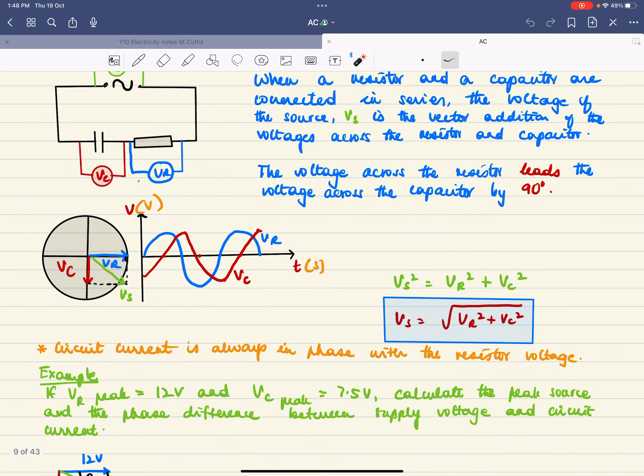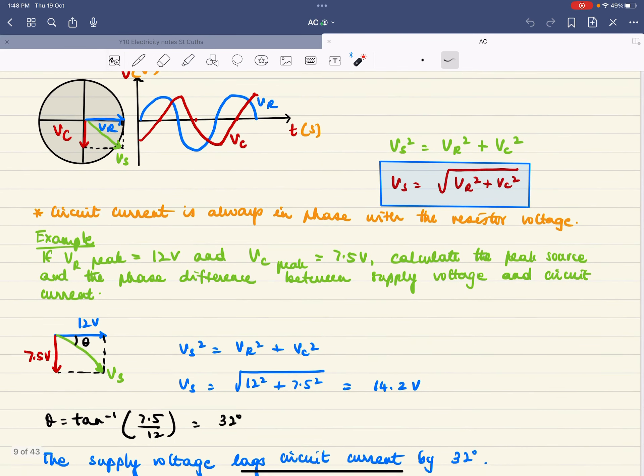The circuit current is always in phase with the resistor voltage. Here's one example.